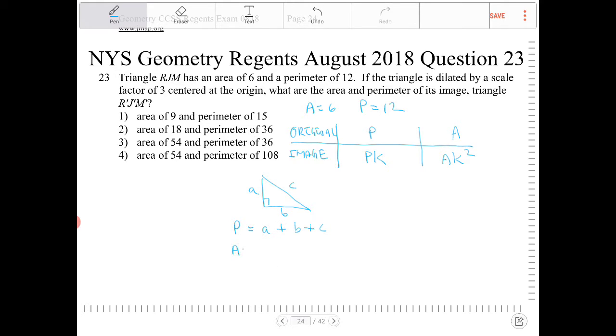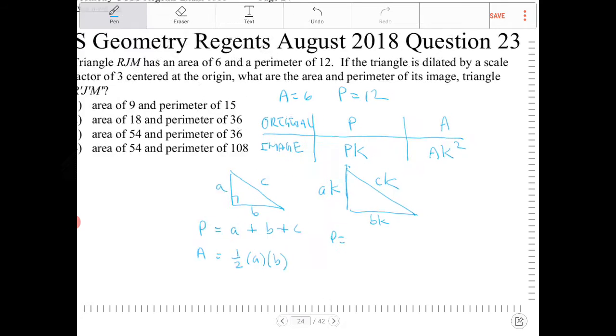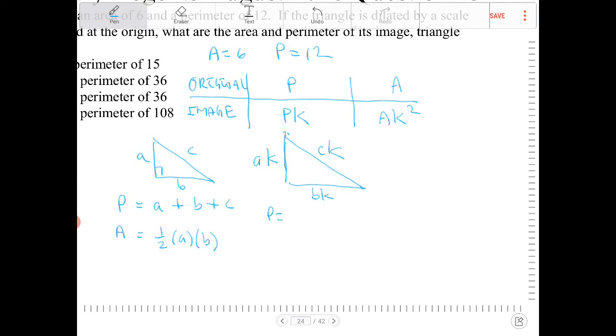The perimeter here is going to be a plus b plus c, and the area is going to be one-half a times b. If I dilate this triangle by a scale factor of k, the sides become ak, bk, and ck.